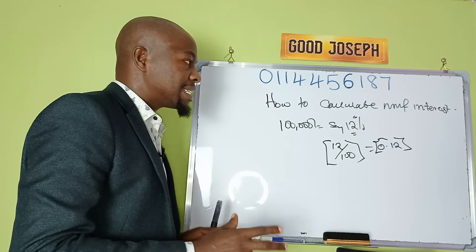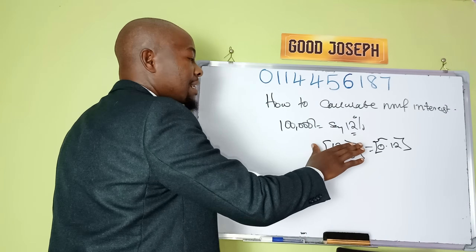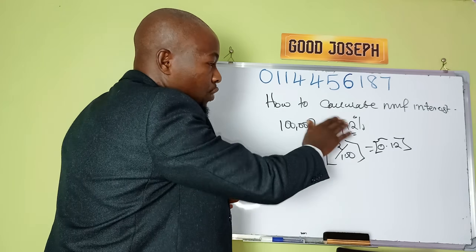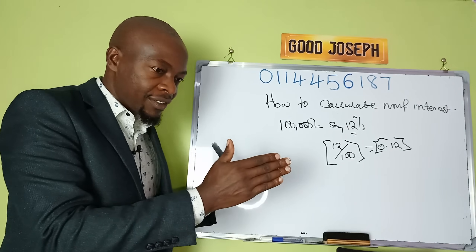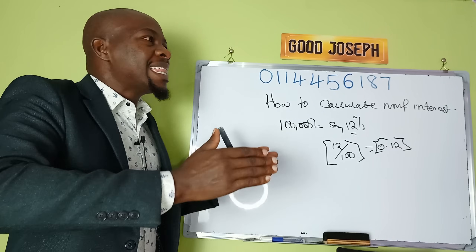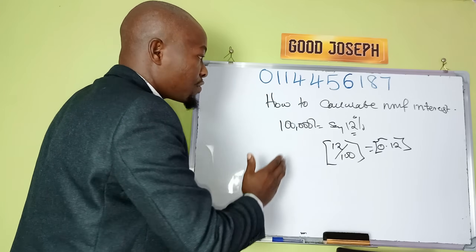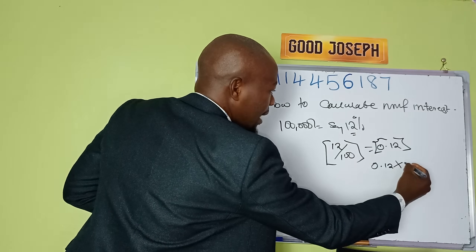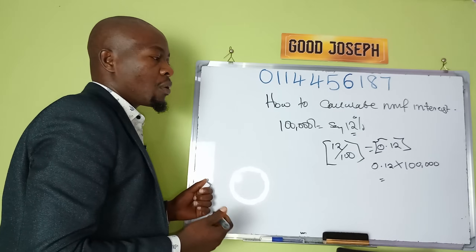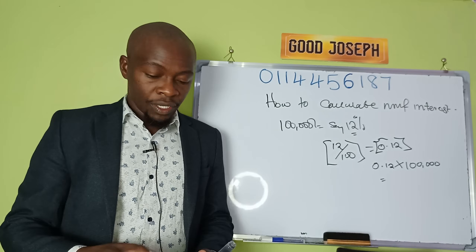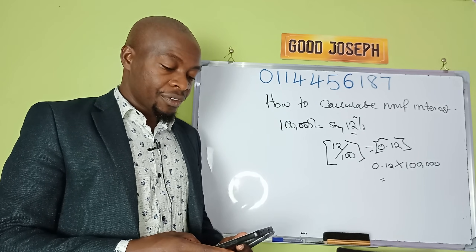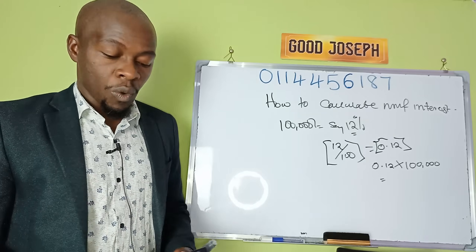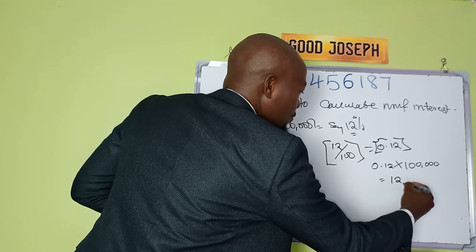This figure of 0.12 is what you're getting at the end of the year on your money. So what does it mean when we say 12% per year? It simply means if you take 100,000, invest it in a money market fund for the whole year without removing even a coin, and assuming the percentage does not change — it remains constant — by the end of the year you will have 12% of this, which is 0.12 multiplied by 100,000, giving you 12,000.